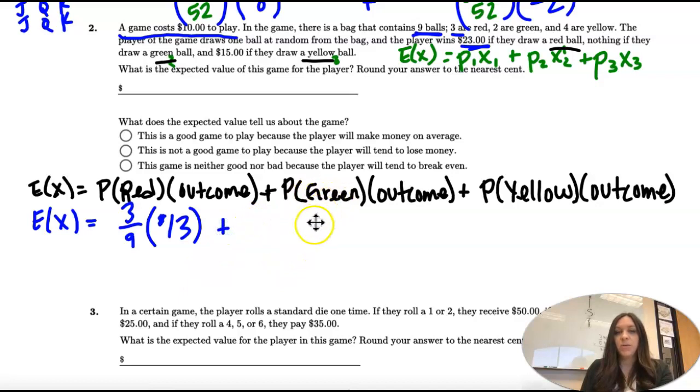Plus the probability of green. There are nine balls, two are green. If we draw a green ball, we get nothing, but we paid $10 to play, so we're actually out $10.